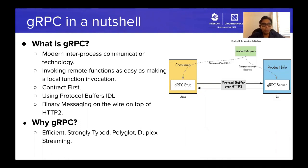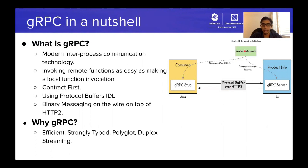Most of you have heard of gRPC or even use it in production, but if you are new to gRPC, it's a modern interprocess communication technology that allows you to build distributed applications. You can design a microservices-based application using gRPC, and remote consumers can consume it over the network as easily as making a local function call. gRPC is based on a contract-first development approach where you define your service using protocol buffers, specifying all your business operations.